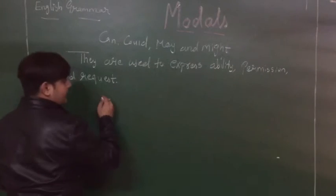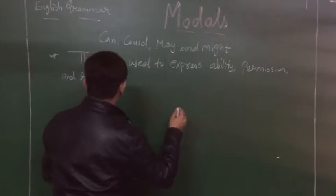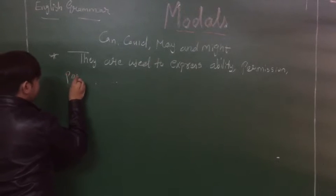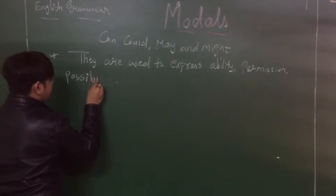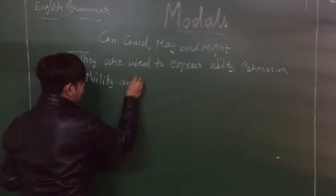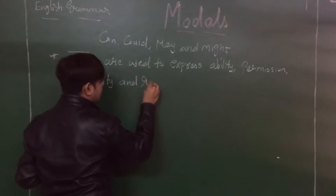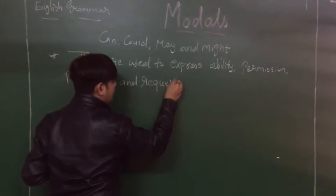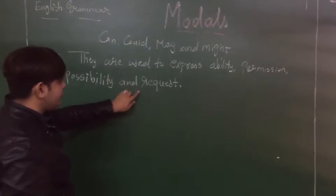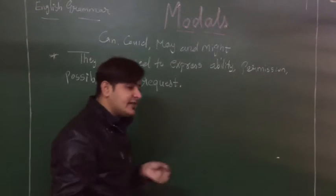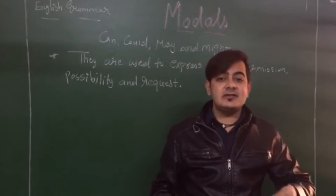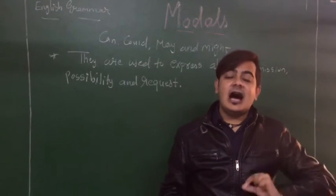Can, could, may, and might are used to express permission, possibility, and request. Now I will give you examples of how can, could, may, and might are used to express each of these — starting with ability.